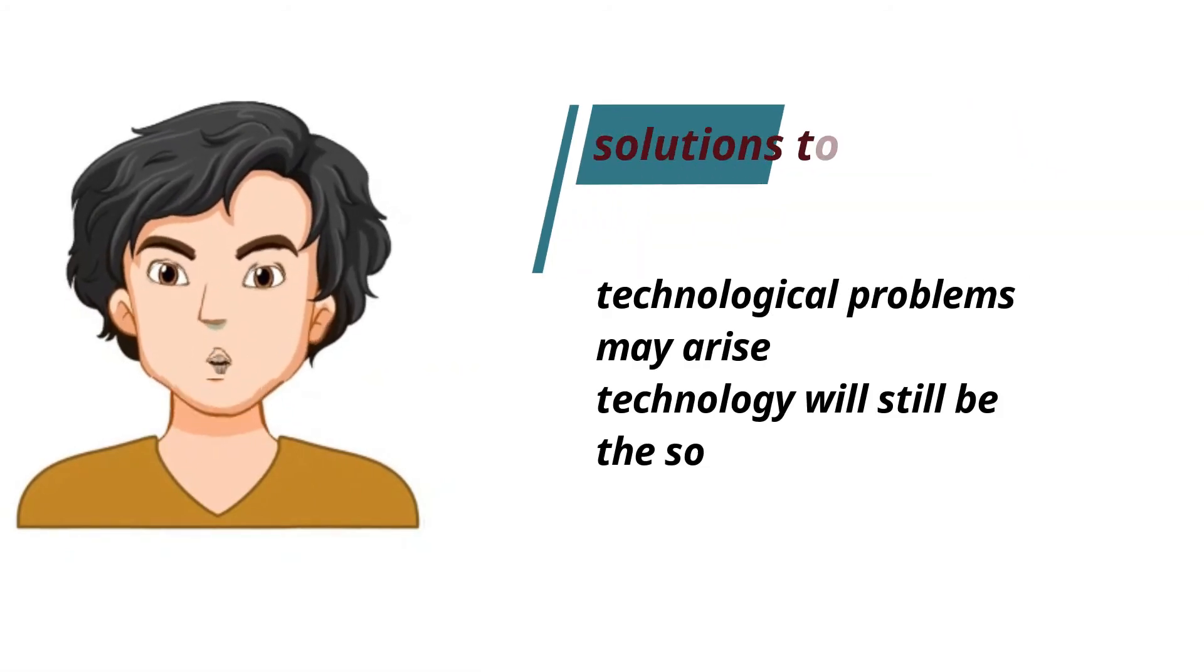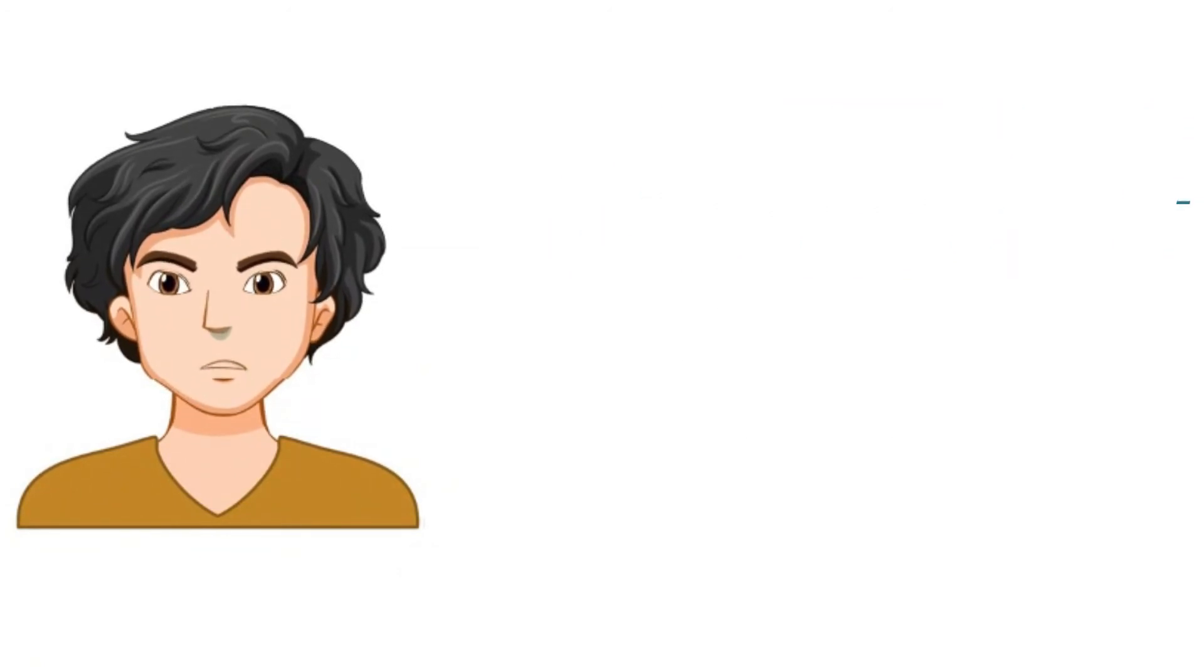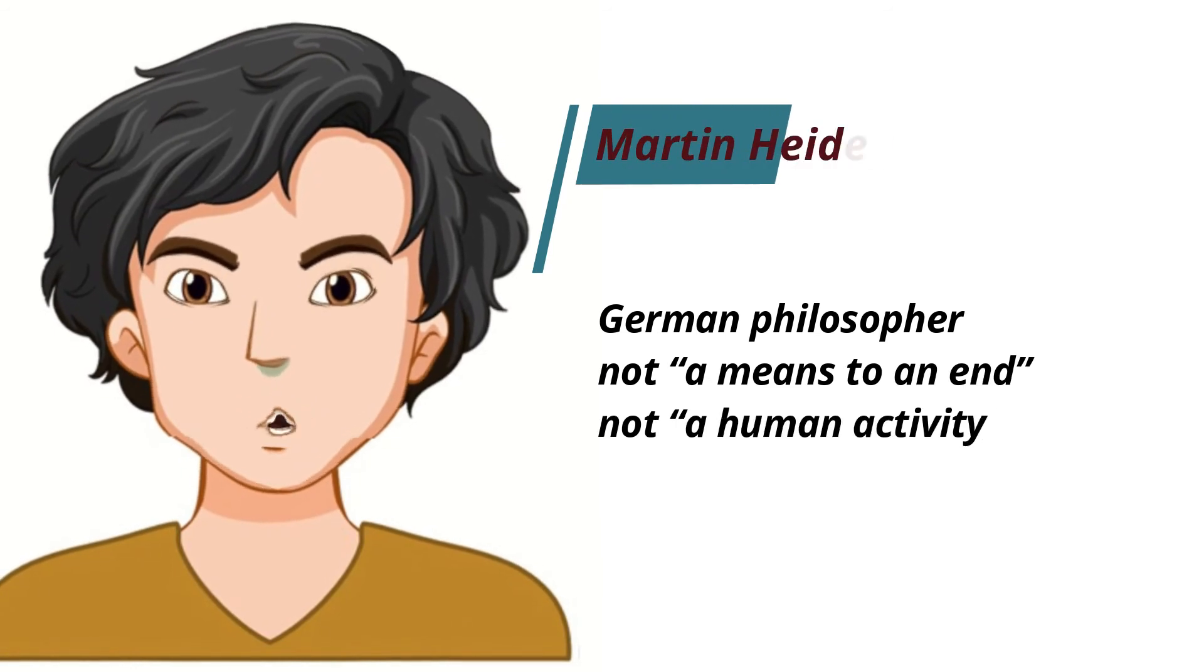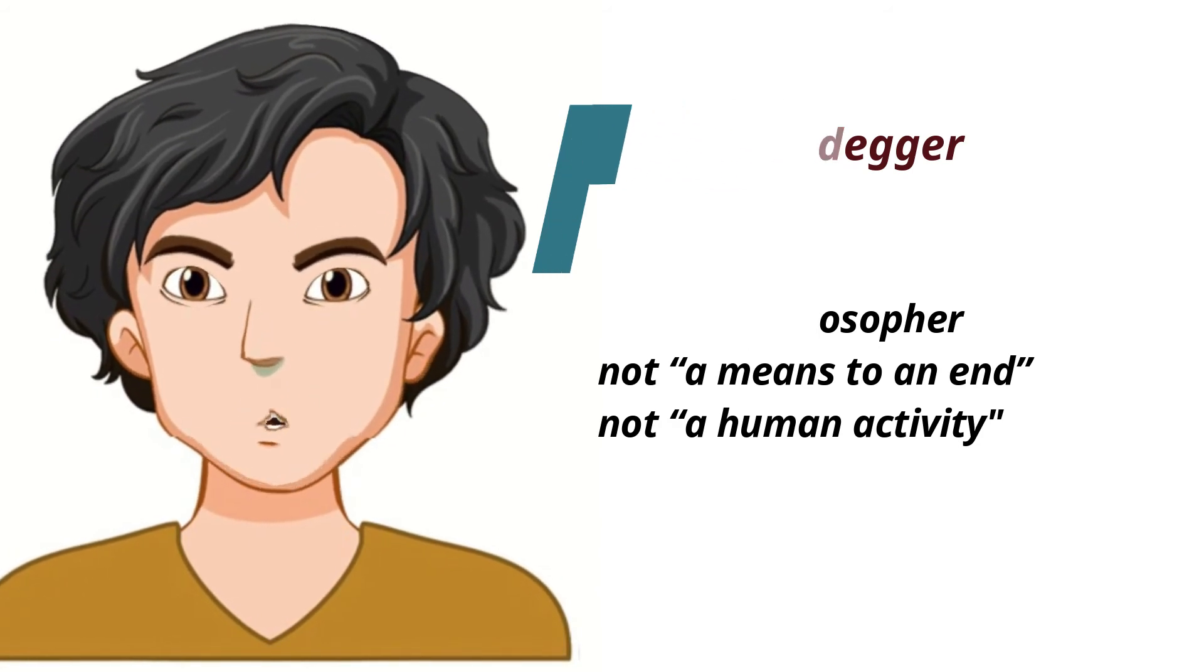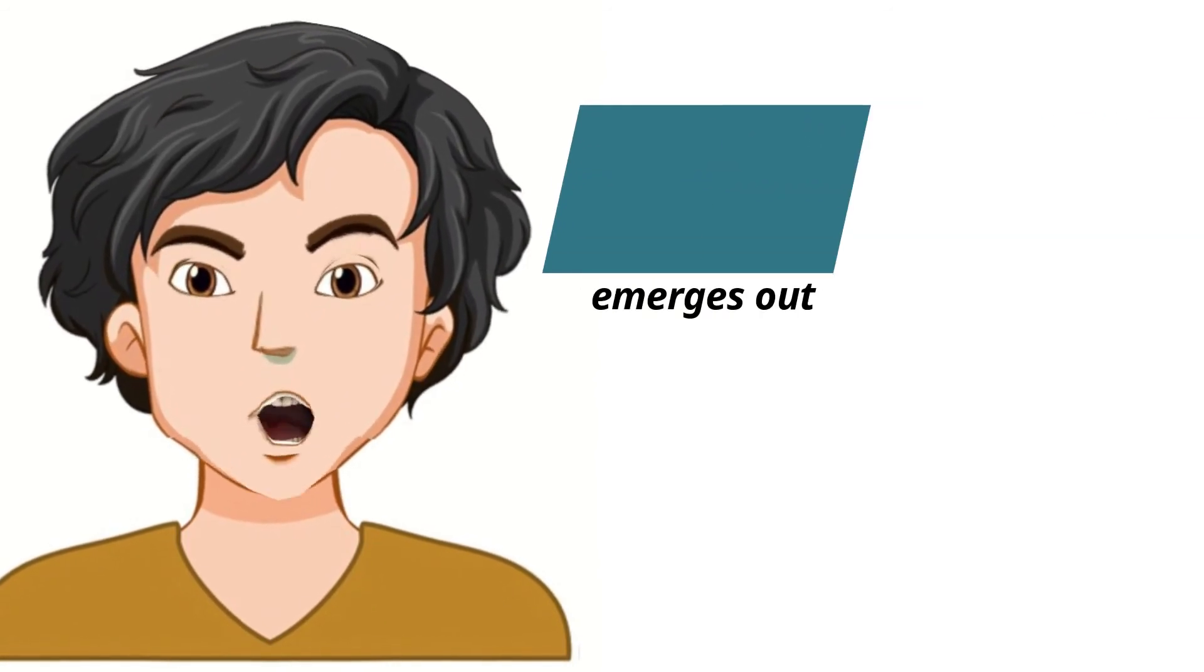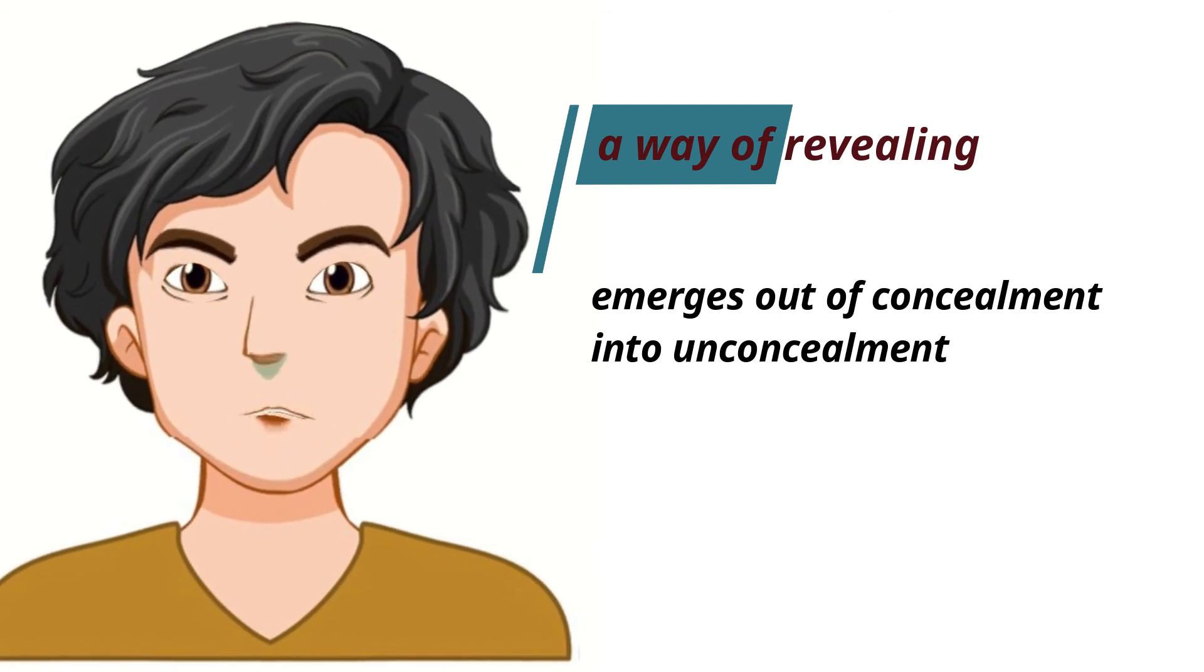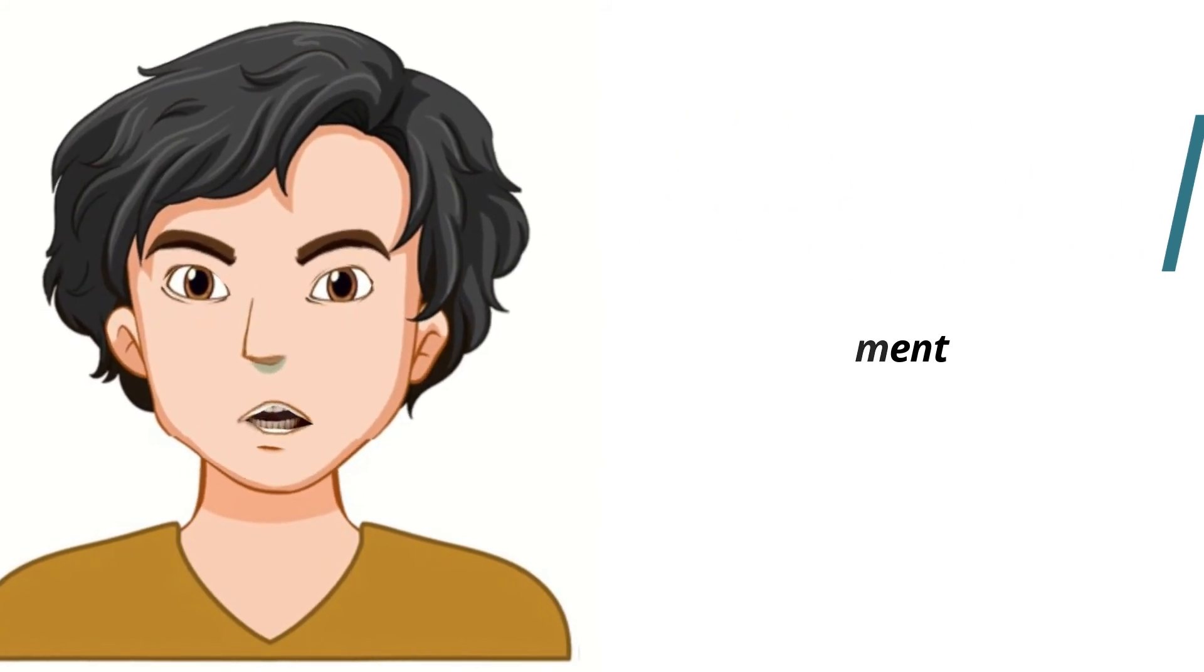Existentialism. Martin Heidegger, a German philosopher, strongly opposes the view that technology is a means to an end or a human activity. Technology, according to him, must be understood as a way of revealing. This means that everything we perceive or think of or interact with emerges out of concealment into unconcealment, from being hidden to being out in the open.